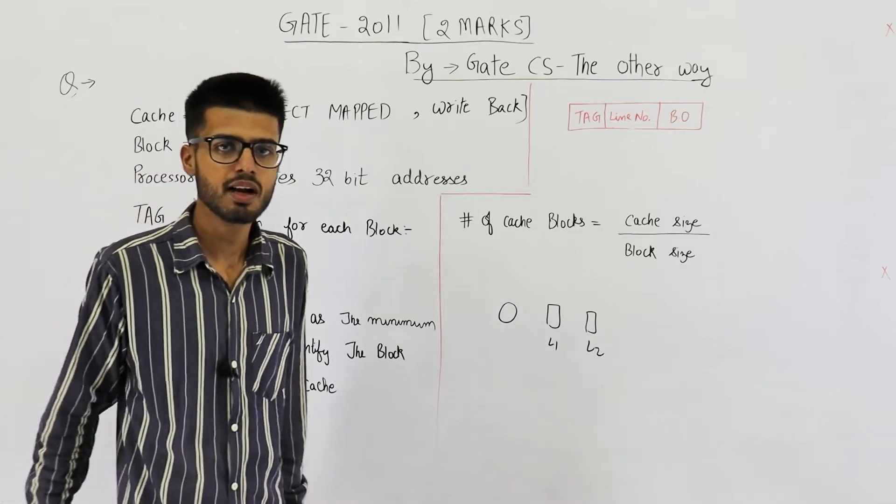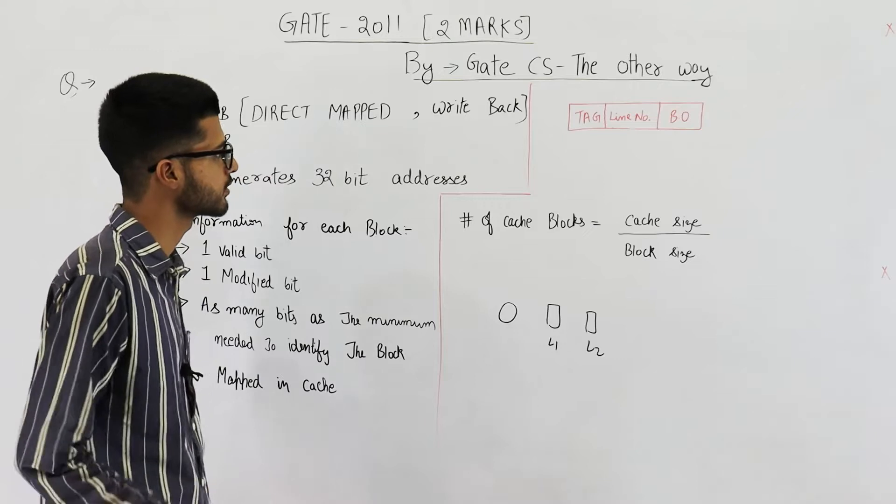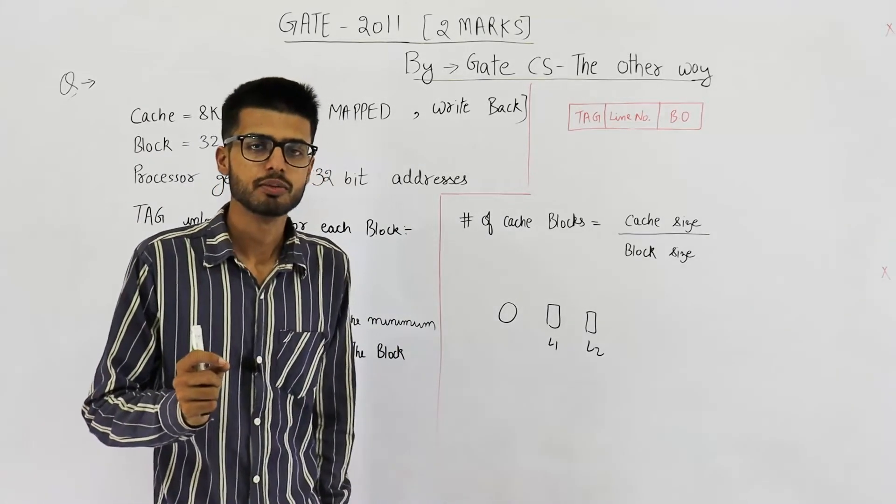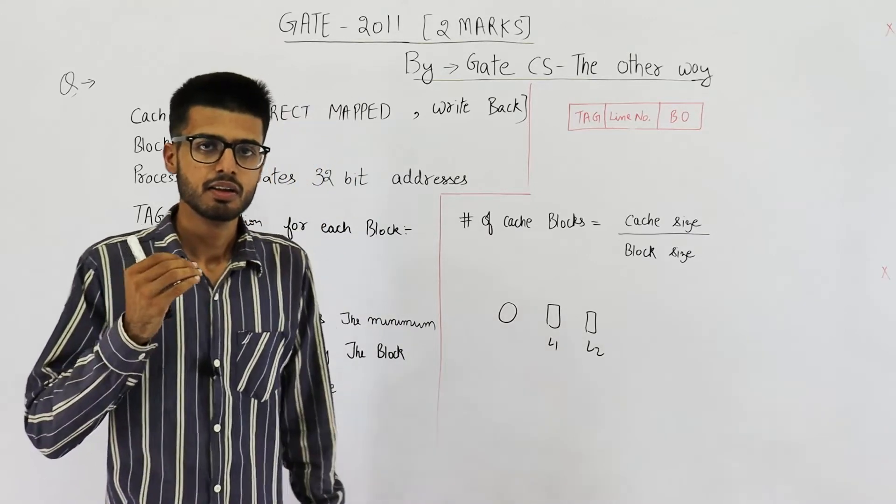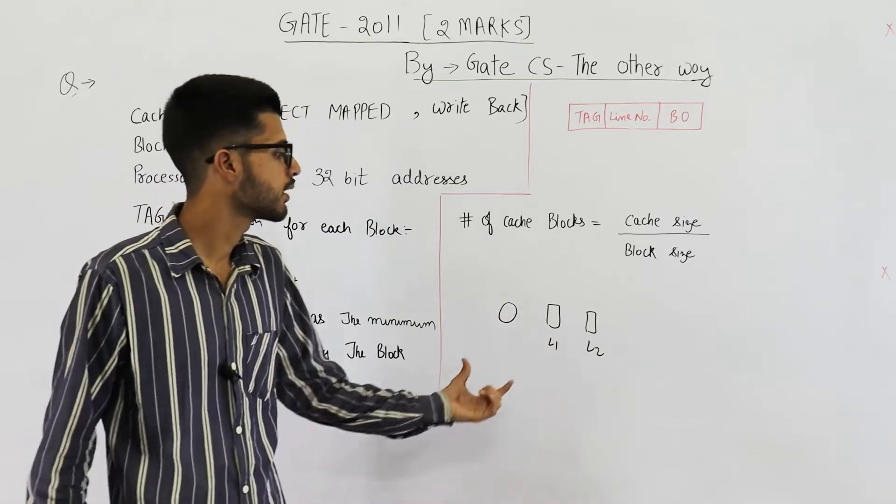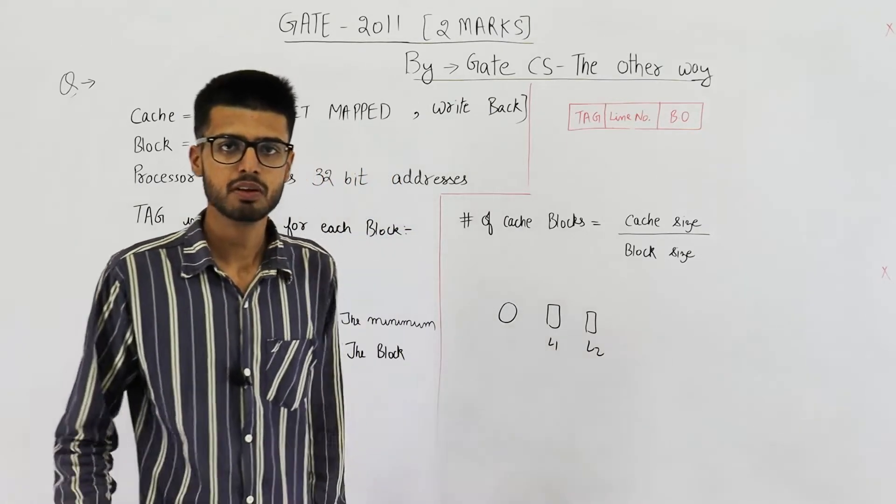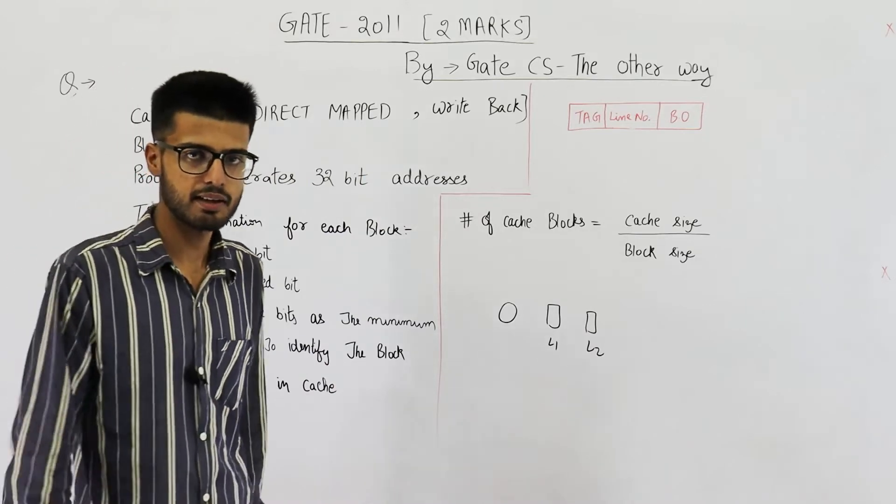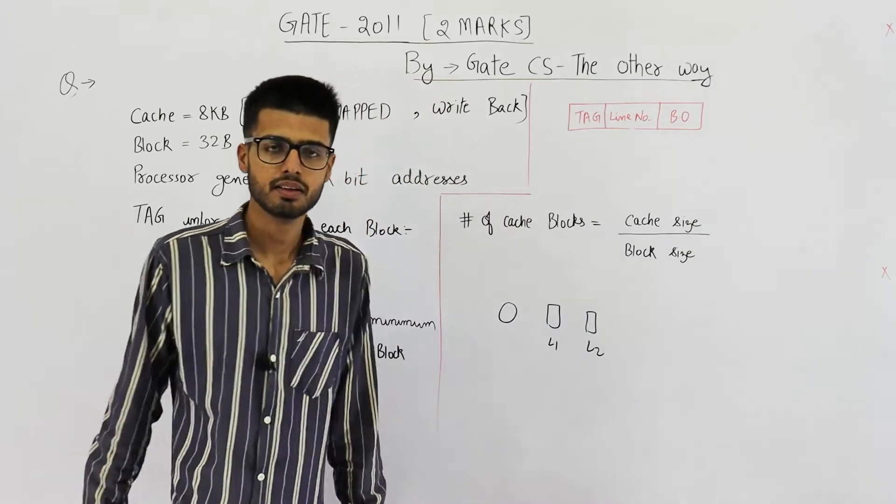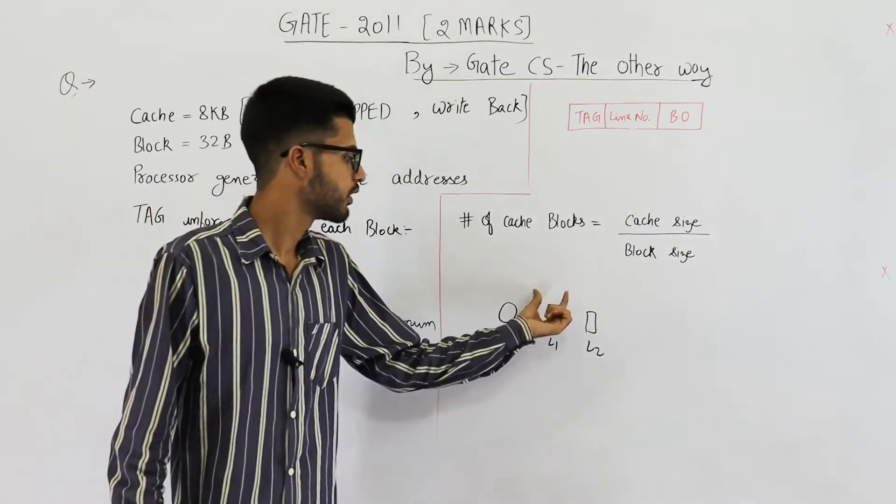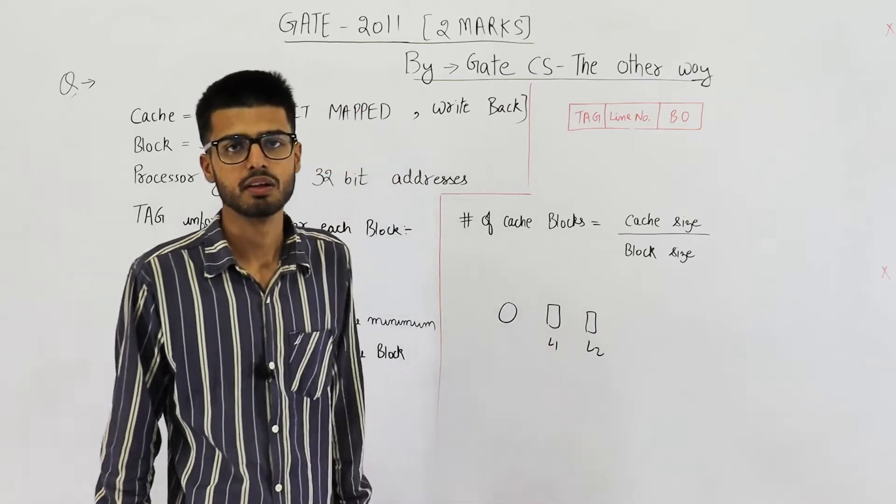That update will be done in L1 as well as L2 as well as L3 and main memory at the same time. Such a cache is called a writethrough cache. And writeback cache is one in which the change is only done on the closest level. So when will the changes propagate to L2, L3 and main memory? When we wish to replace that particular block from L1.